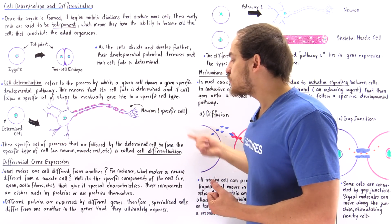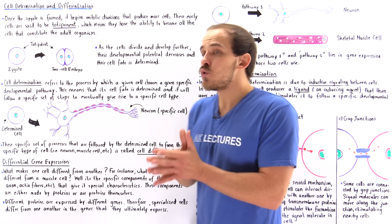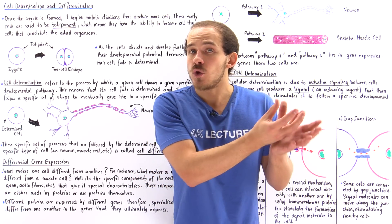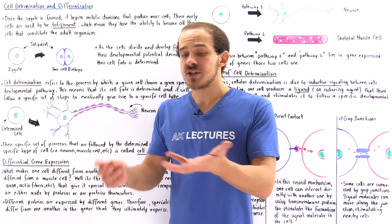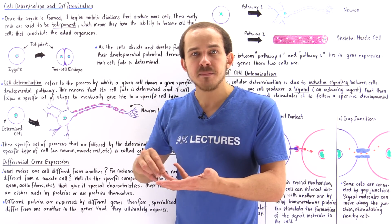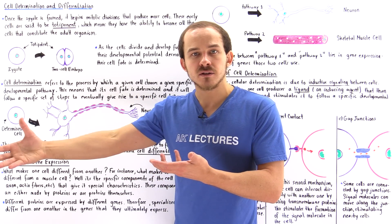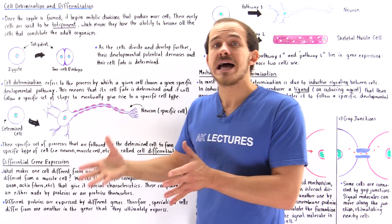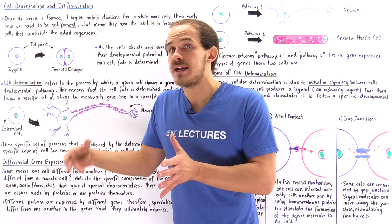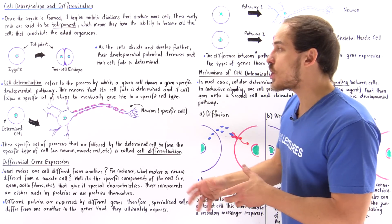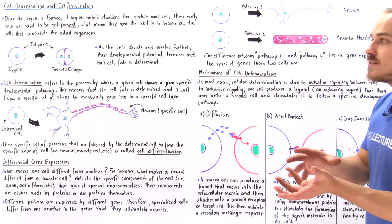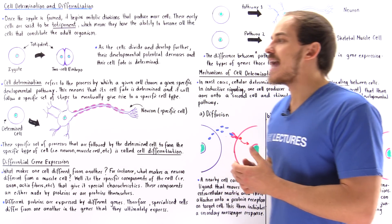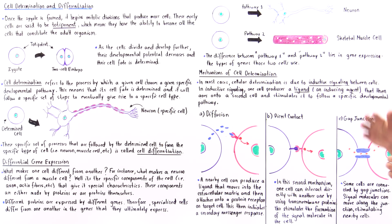Cell differentiation is analogous to a person choosing the pre-medical path and then following a certain set of processes — taking the prerequisite courses, taking the MCAT, volunteering, applying to medical school, going to medical school, and so forth. These processes eventually allow that person to differentiate into that physician. So these are the two processes that must take place before a specialized cell is actually produced.